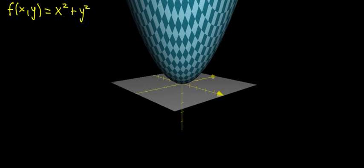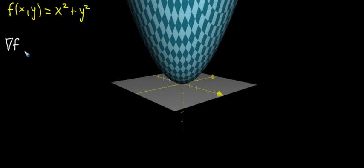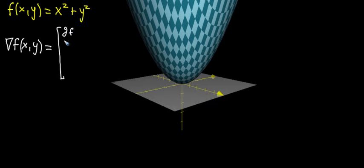I defined in the last video the gradient to be a certain operator. An operator just means you take in a function and output another function, and we use this upside-down triangle symbol. It gives you another function that's also of x and y, but this time with a vector-valued output. The two components of its output are the partial derivatives: the partial of f with respect to x, and the partial of f with respect to y.